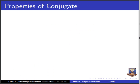Let us go to some properties of conjugates. The first property is: the conjugate of the conjugate of Z equals Z itself. If Z = x + iy, then Z̄ = x − iy, and taking the conjugate once more gives back Z. You can pause this video for a few seconds, take pen and paper, and verify this by taking conjugate twice.